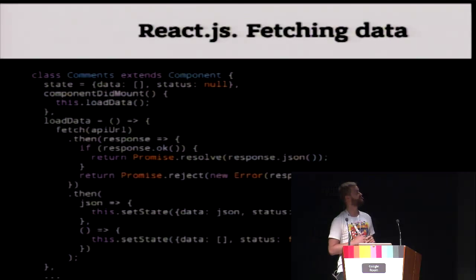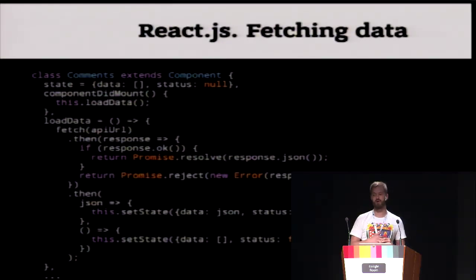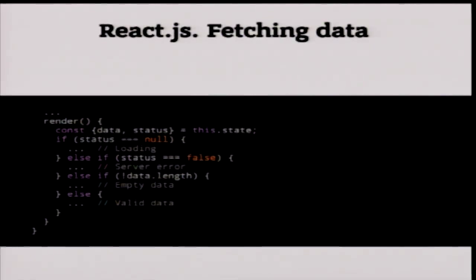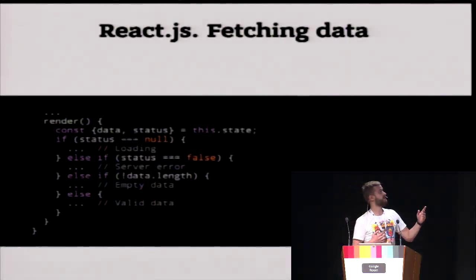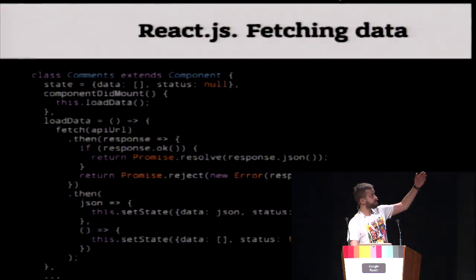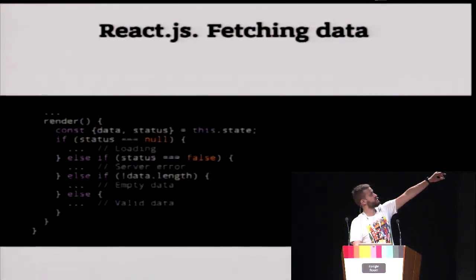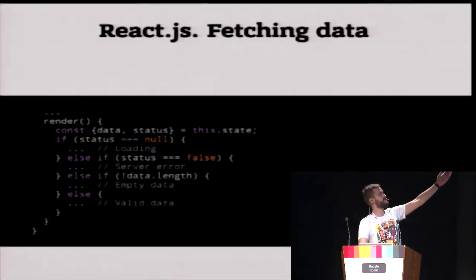For fetching data, we use the new Fetch API — we don't need jQuery or other libraries to fetch data from the server. We use fetch and then promises. When we have good data, we set it to the component's comments. When the data is bad, we set a false status. In the render method, when the component is first mounted it has null status, so we show loading to the user. Then based on status and data, we show a server error, empty data, or valid data.